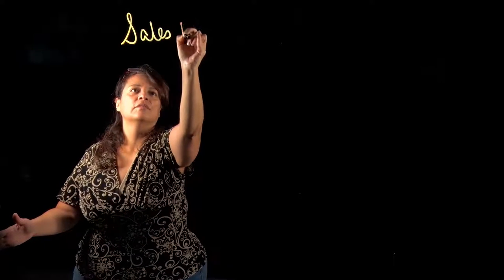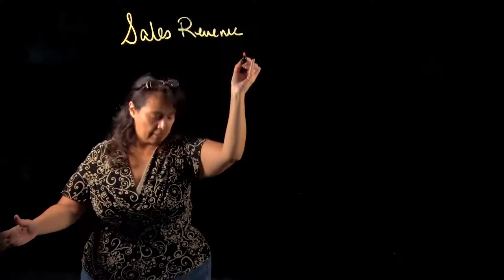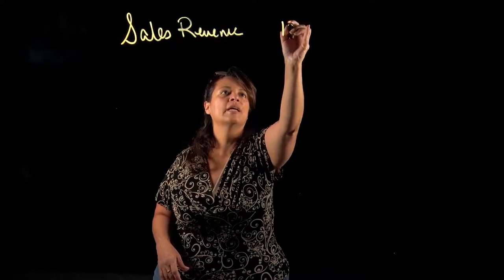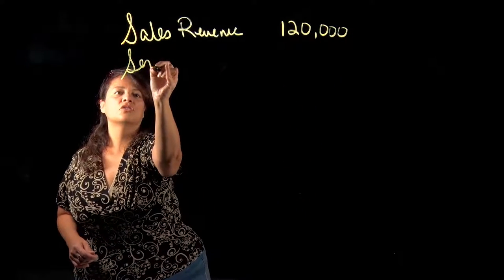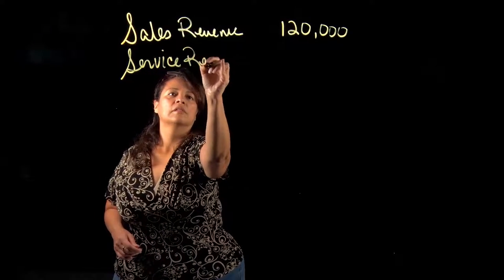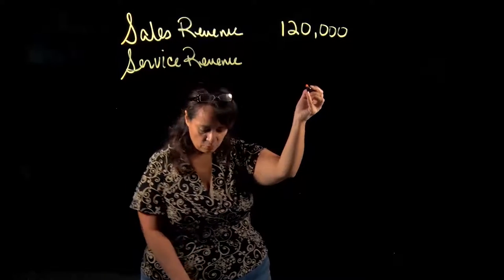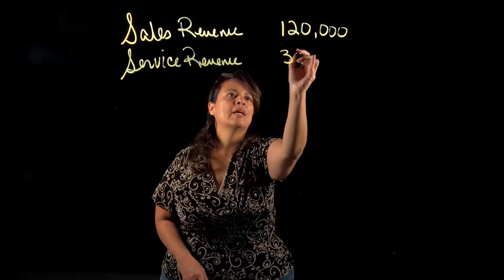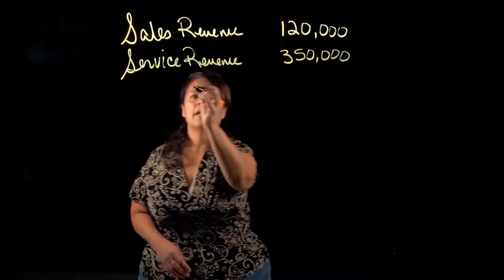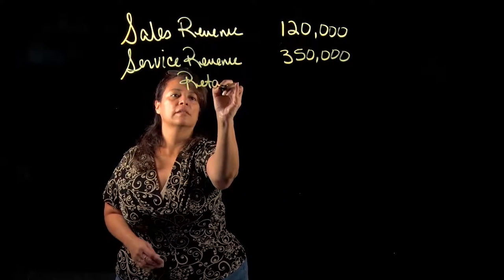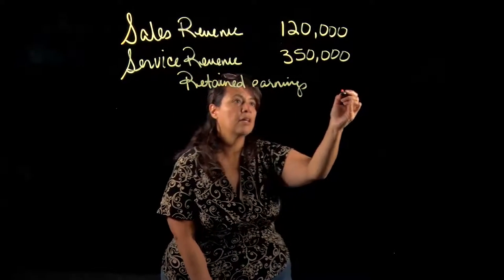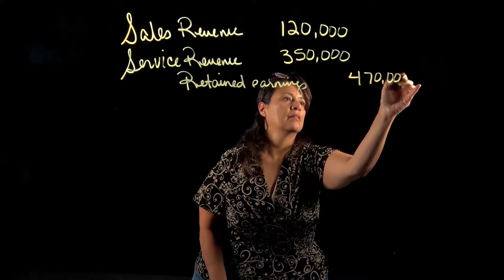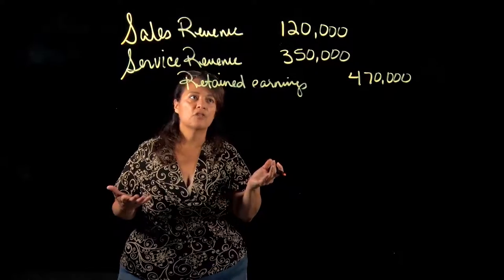The first account is our sales revenue, and that has a credit balance of $120,000, so we're going to debit it $120,000. Then our service revenue account, we're going to debit that one for $350,000. And we're going to credit retained earnings for a total of $470,000. That's our first journal entry.